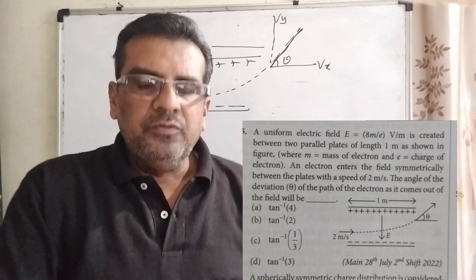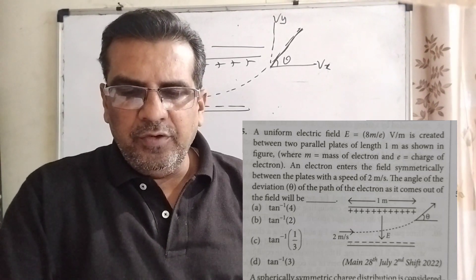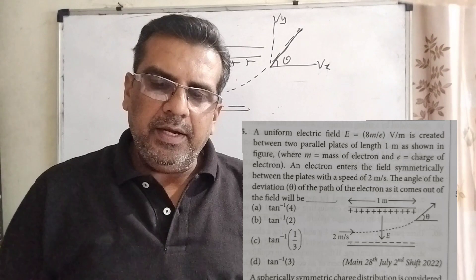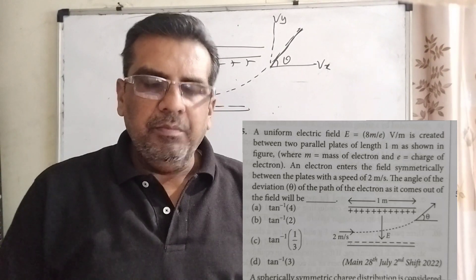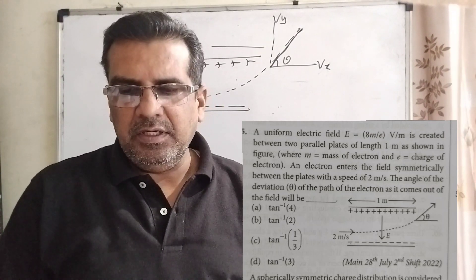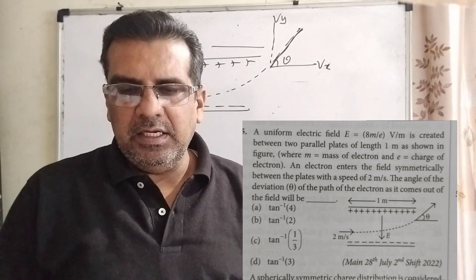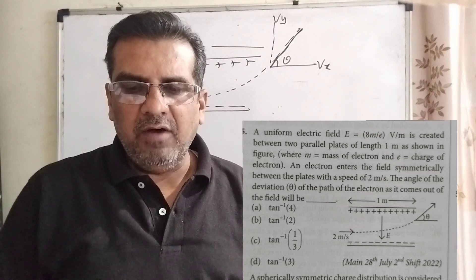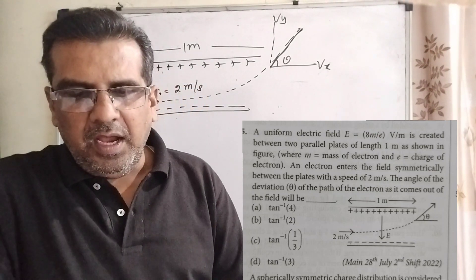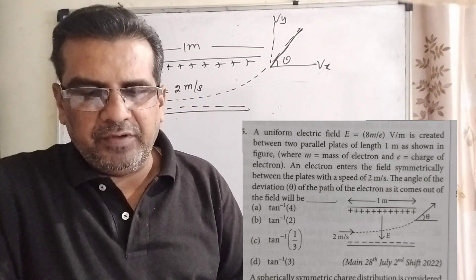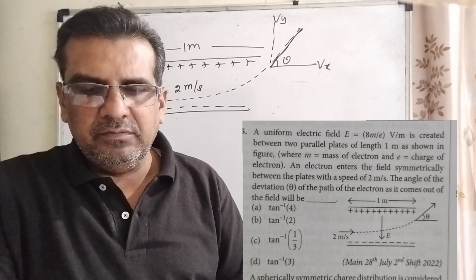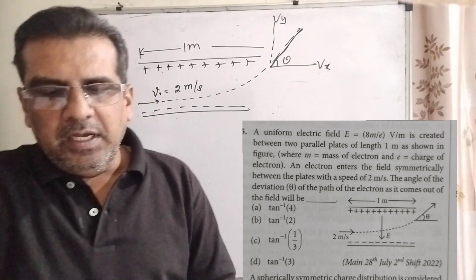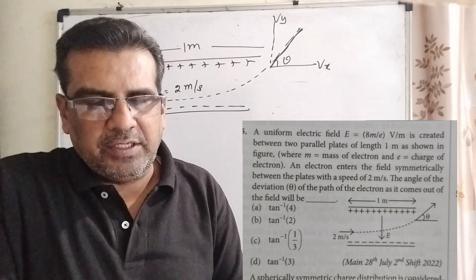Let's move on. What does the question say? A uniform electric field E equal to 8M/e volt per meter is created between two parallel plates of length 1 meter, as shown in the figure, where M is the mass of the electron and e is the charge of the electron.